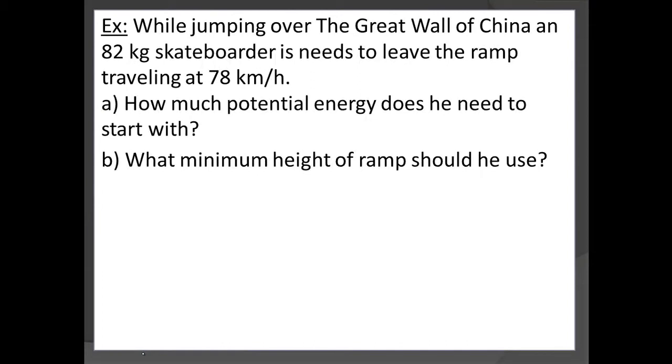While jumping over the Great Wall of China, an 82 kilogram skateboarder is needing to leave the ramp traveling at 78 kilometers per hour. How much potential energy does he need to start with? So if we take a look, the first thing we need to do before anything is we need to convert 78 kilometers per hour into SI units. You may remember that we have this 3.6 that we play with, or we use proportional reasoning, but I'm going to imagine at this point in your physics career, you should be able to get 21.67 meters per second.